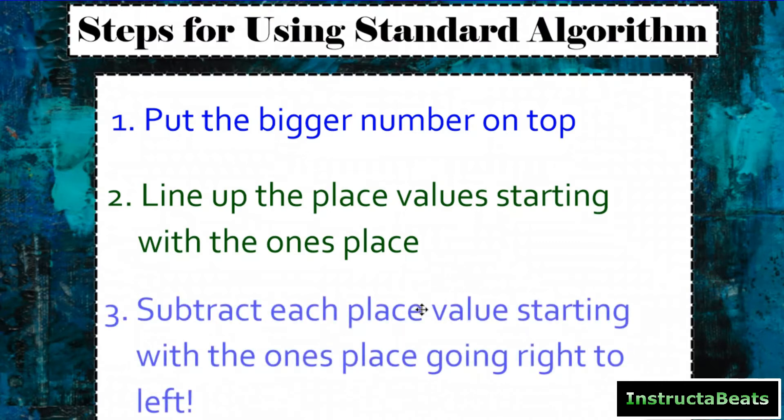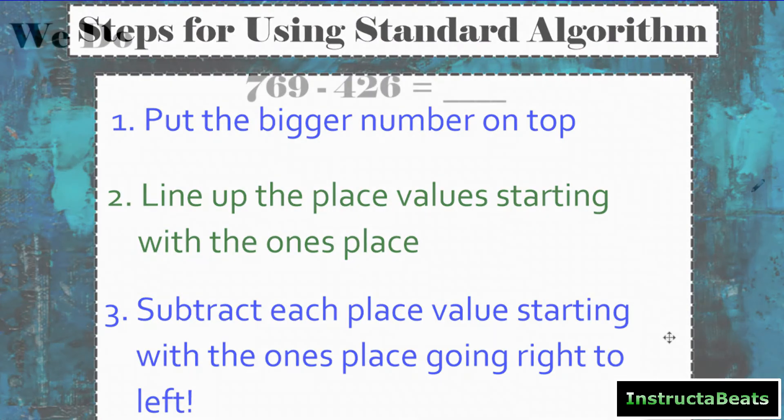And then step number three, you're going to subtract each place value starting with the ones place going from right to left. Now, you're really going to be saying that kind of a little rhyme in your head: more on the top, no need to stop, more on the floor, go next door, get 10 more. But we're going to get into that in our next lesson when we're doing regrouping. Today, we just want to worry about going from right to left, making sure our place values are lined up, and that we're being neat.